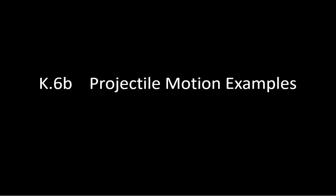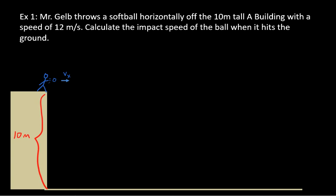Alright, so let's go to the first question. Mr. Gelb throws a softball horizontally off the 10-meter-tall building with a speed of 12 meters per second. Calculate the speed of the ball when it hits the ground. Hit pause, try the problem on your own.